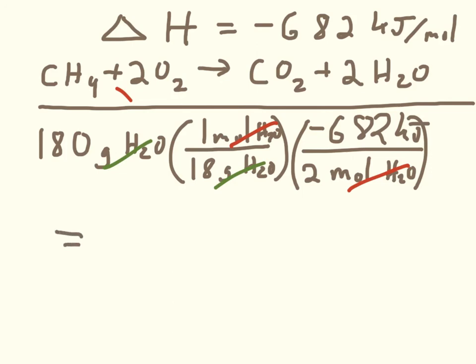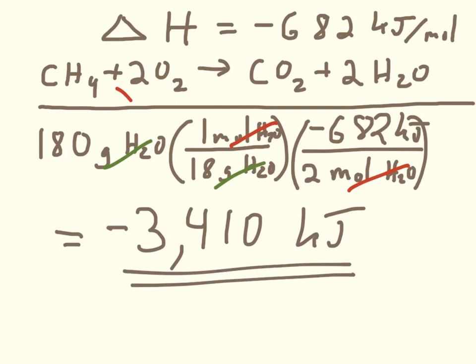And that leaves us with an answer of a negative 3,410 kilojoules of heat being released. So that's how much heat would be released if we produced in the reaction 180 grams of water. So we can see this is just another stoichiometry problem.